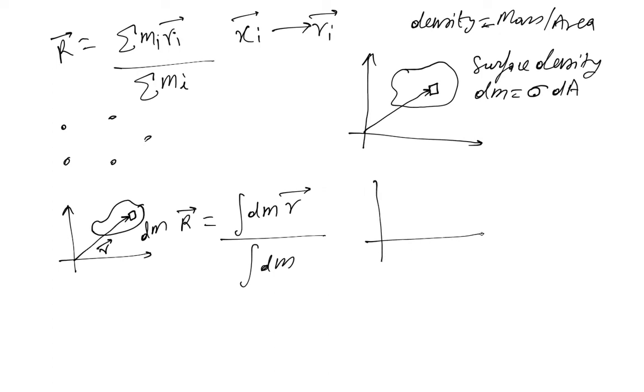Similarly, you can in fact have a three-dimensional case. In this case, it's a three-dimensional object and then you will have a three-dimensional figure. And this will be actually dV that is the volume element. And here density is defined as mass over volume.